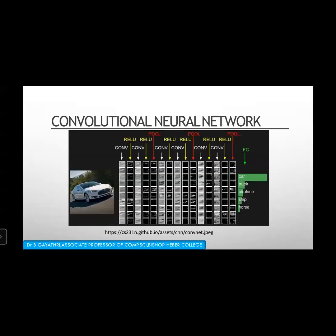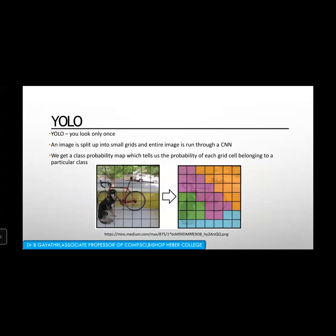This is the CNN with its various layers — the convolutional layer, the ReLU layer, and the pool layer — allowing us to identify how many cars, trucks, airplanes, and ships are present. The YOLO (You Only Look Once) mechanism splits an image into small grids, runs the entire image through a CNN, and produces a class probability map showing the probability of each grid cell belonging to a particular class, allowing us to classify everything efficiently.